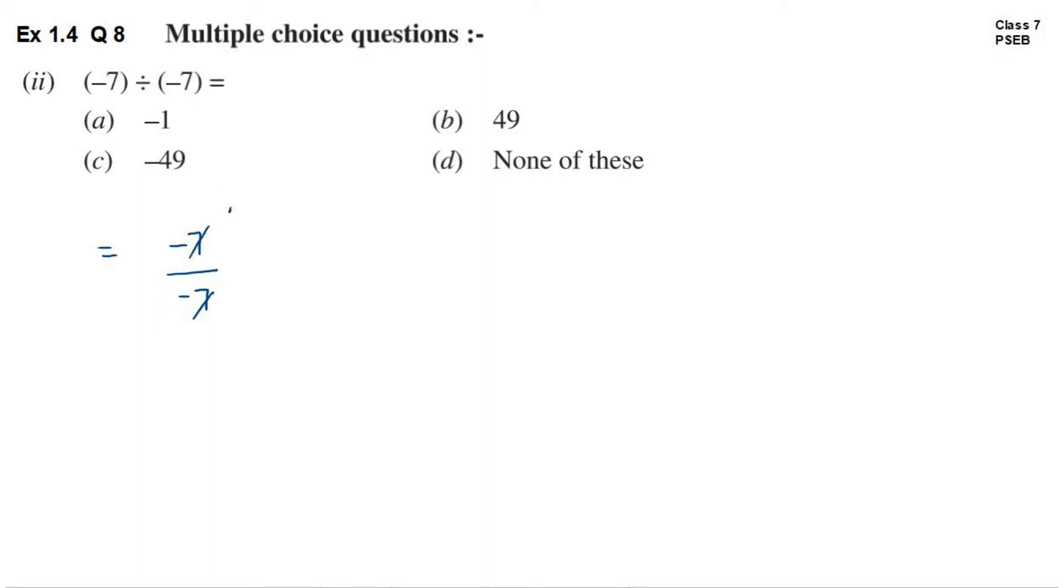7 aapas mein cancel ho jaayenge. Ab yeh minus ke sign bhi aapas mein cancel ho jaayenge. So yeh kya aa jaayega? 1 upon 1. So this is equal to 1. 2 minus ke sign ho, to answer mein aata hai plus ka sign. Theek hai? Ab 1 to yahan par kisi bhi option mein nahin diya hua. So jo D option hai, jismein mentioned hai none of these, yahi hai correct option.